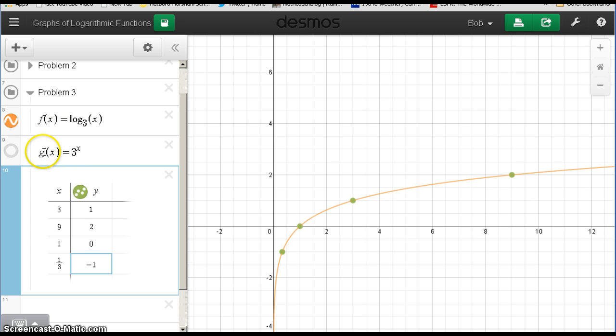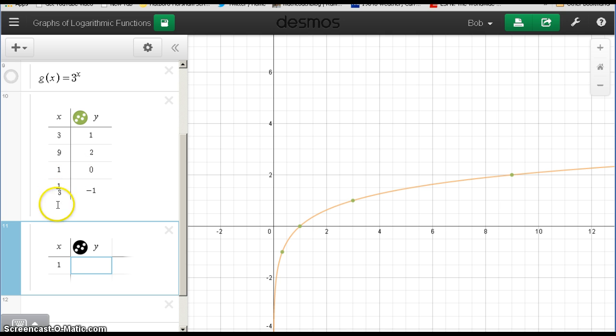How about our other friend here? G of x equals 3 to the x power. Keep in mind that f of x and g of x are inverse functions, so we should see some symmetry here. Let me make another table, this time for 3 to the x power.